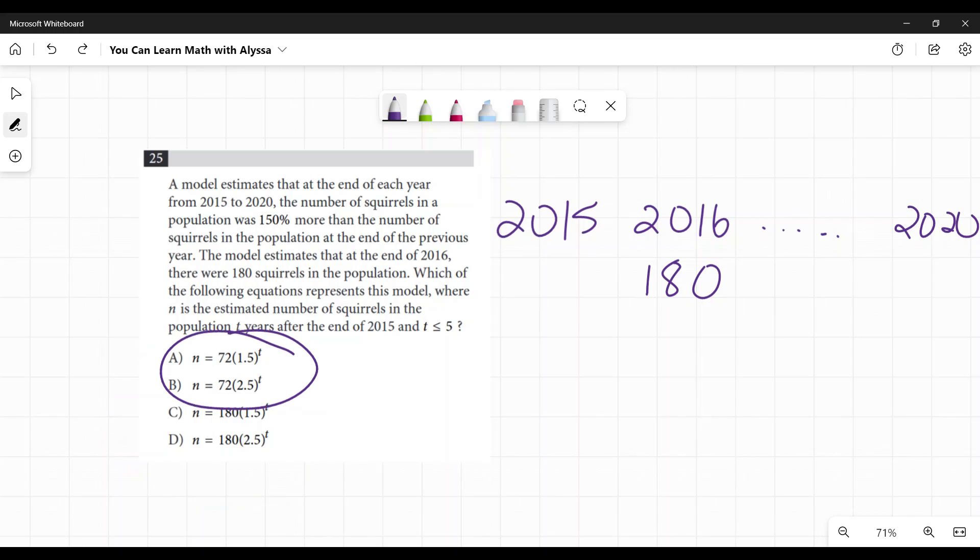So what do you see? I see 72 is used twice. And the difference here is whether I'm multiplying by 1.5 or 2.5, and then I see 180 used twice. And the difference being multiplying by 1.5 or 2.5. So now I know I either need to figure out if I'm starting with 72, or I'm starting with 180.